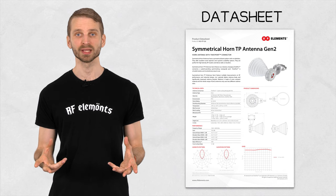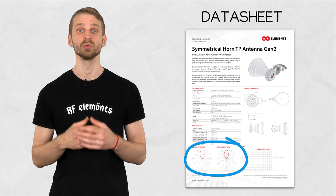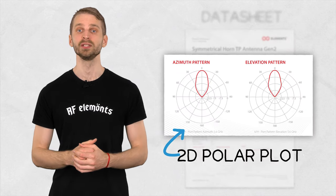In our previous video, we've explained what an antenna radiation diagram is and how to read it. Most frequently, the data sheets of antennas show the gain of an antenna in the form of a 2D polar plot.